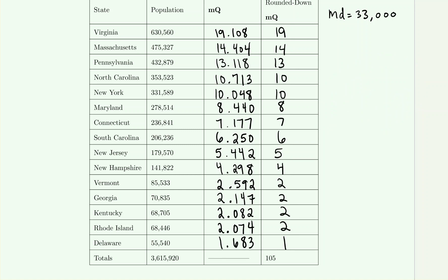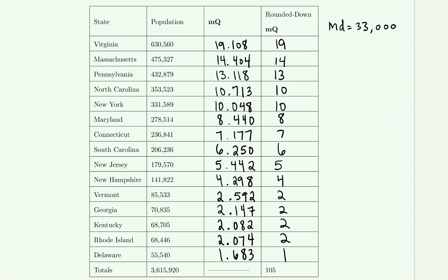Following the Jefferson method, the House of Representatives seats are distributed as follows: Virginia gets 19, Massachusetts gets 14, Maryland gets 8, Delaware gets 1, and Rhode Island gets 2 — seats distributed based on population. Adding all the rounded MQ values together gives 105, which equals the total seats we had to distribute. That's how we can check our work.